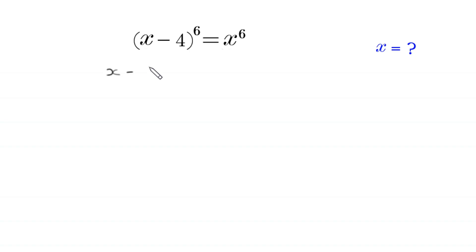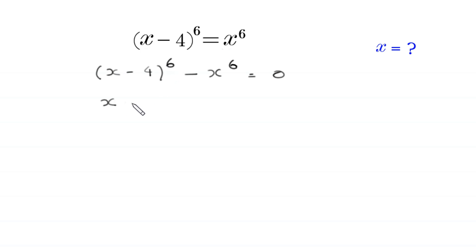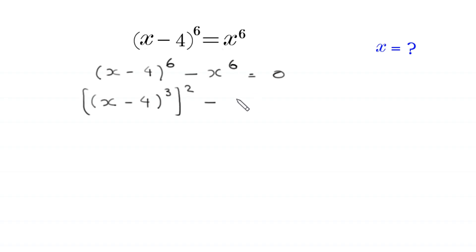Then this equation will become: (x minus 4) to the power 6 minus x to the power 6 is equal to 0. Now this can be written as (x minus 4) cubed, whole to the power 2, minus (x cubed) whole to the power 2, is equal to 0.